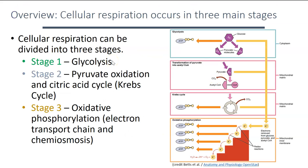The redox reactions of cellular respiration are grouped into three major pathways. The first pathway is glycolysis. The second is the citric acid cycle, with an intermediate step called pyruvate oxidation. The last stage is oxidative phosphorylation, which can be divided into the electron transport chain and chemiosmosis. It's important to know this order: glycolysis, then the citric acid cycle, then oxidative phosphorylation.